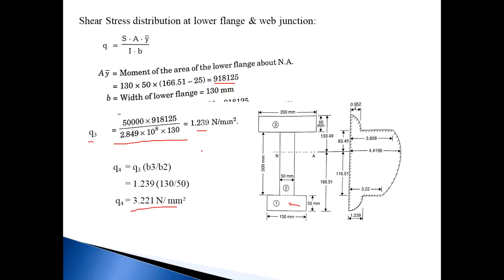Using Q₁ = 0.952, Q₂ = 3.808, Q₃ = 1.239, Q₄ = 3.221, and Q_NA = 4.41 N/mm², draw the shear stress distribution diagram. The diagram starts and ends at 0 at the top and bottom. Draw horizontal lines at the flange-web junctions (Q₁ to Q₂, and Q₃ to Q₄), and join all remaining points with parabolic curves. This is the shear stress distribution diagram for the unequal I section.